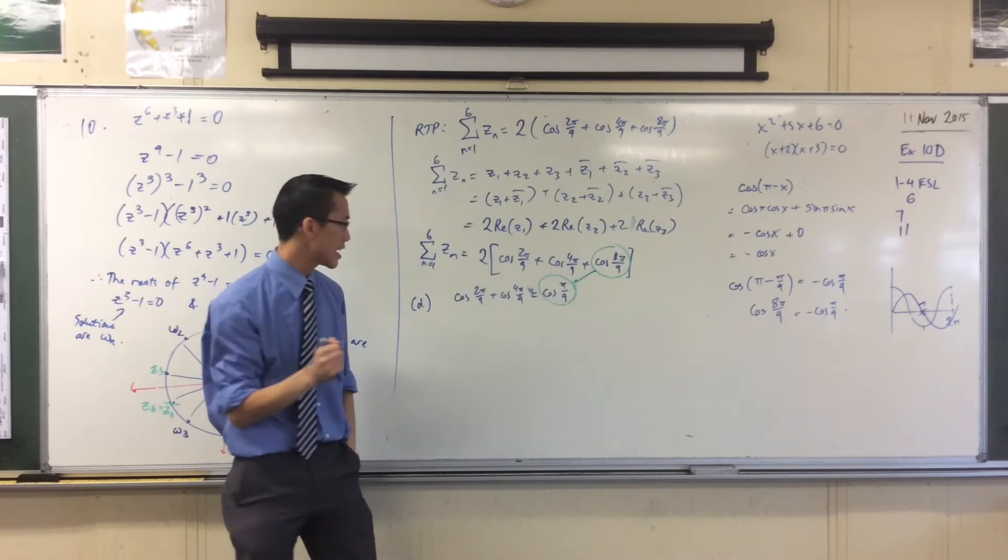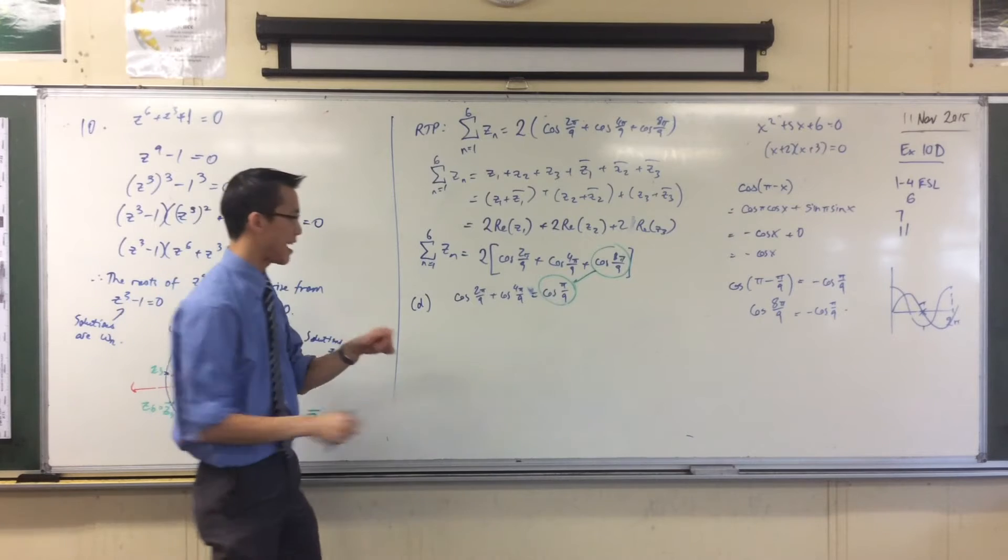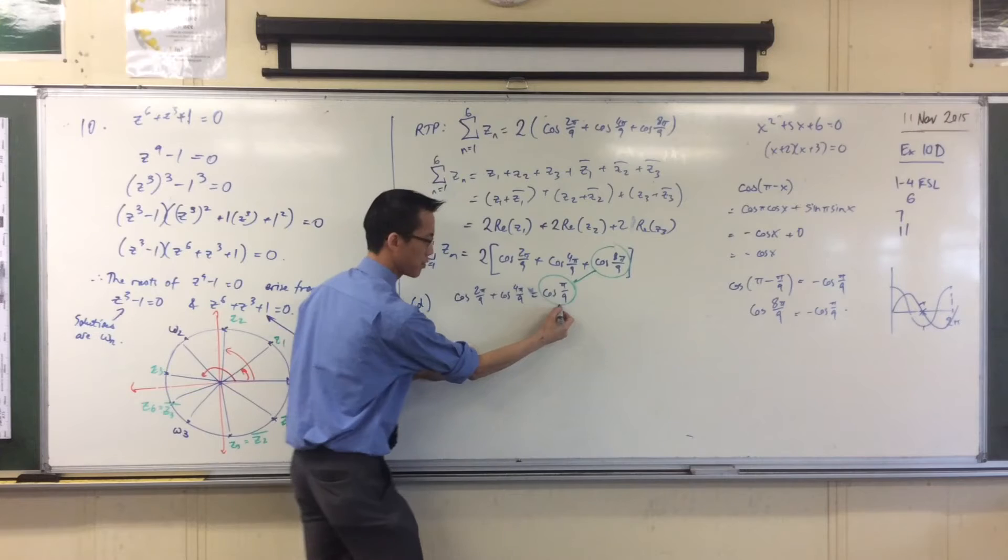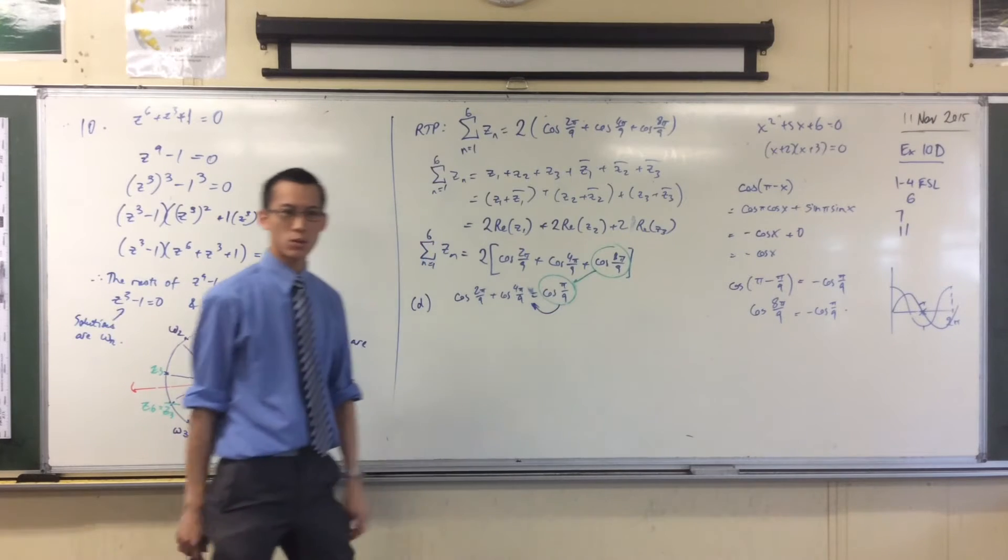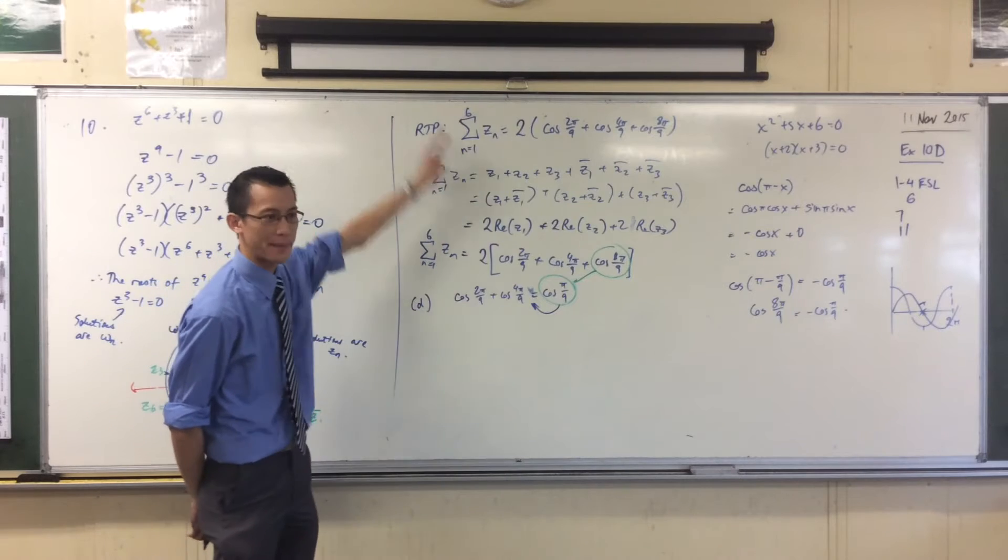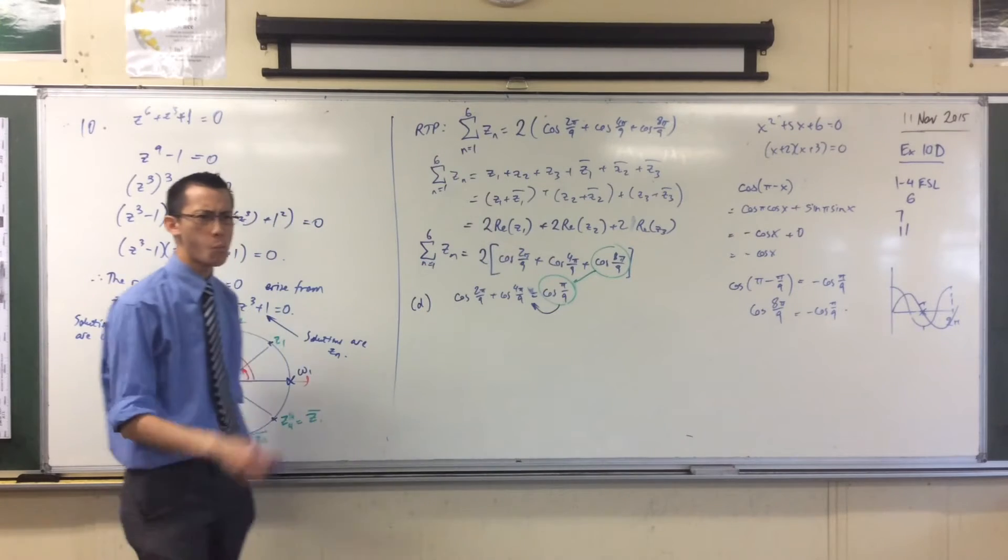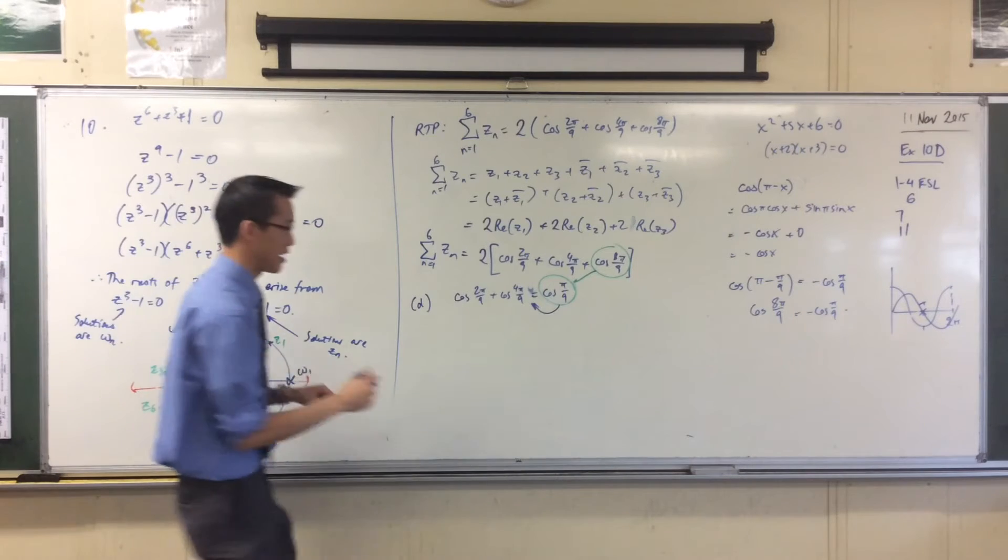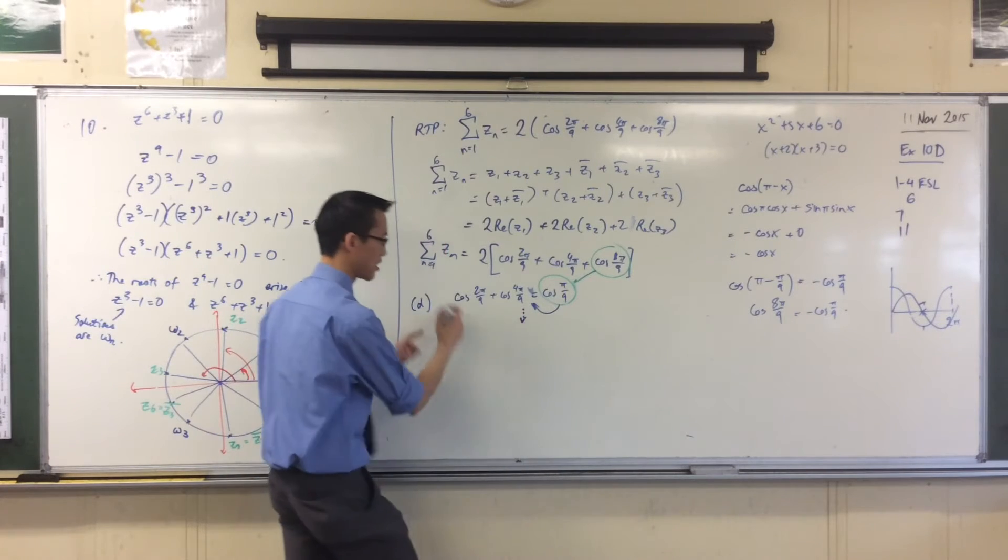But now the next thing I need is, how do I connect this to an equation? Because these two are equal to, if I put this guy over the other side, it's equal to zero. How did zero come into this? I don't know anything about zero here. What I'm trying to say is, this, which I don't know yet. This is what I'm required to prove.